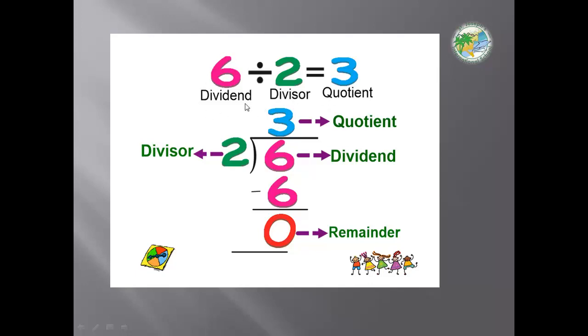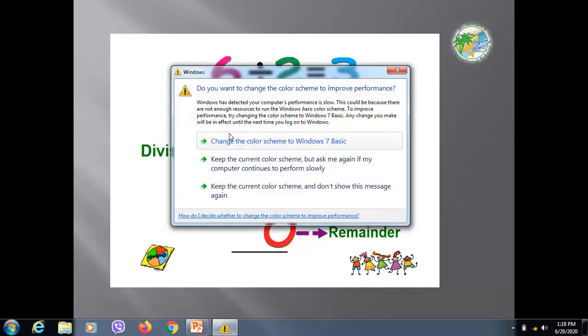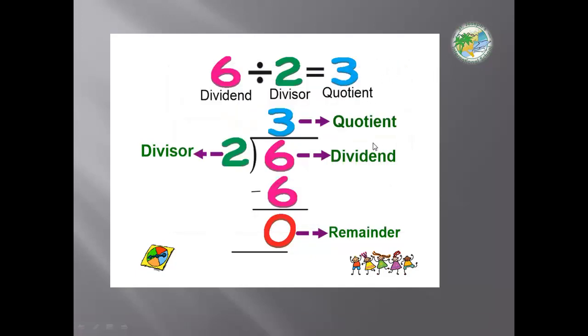So the first number here is the dividend, divide symbol, divisor and quotient. If we divide 6 divided by 2 by house method, it will be 6 divided by 2 equals 3. So 3 here is the quotient.